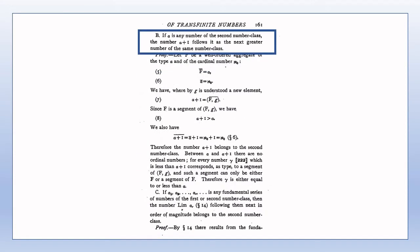Theorem B shows that by adding 1 to an ordinal number, we obtain the next ordinal number. That is, as we might expect, there are no ordinal numbers between alpha and alpha plus 1. This method of obtaining new ordinal numbers by adding 1 may be called the first principle of generation.